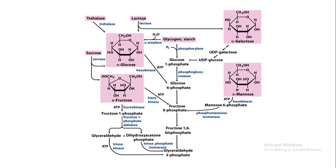Here is a sketch where you can see that all sugars other than glucose manage to convert themselves into one of the intermediates of glycolysis, and then contribute to energy production. For example, mannose, by the action of certain enzymes, is converted into fructose-6-phosphate, which then enters glycolysis and is converted into fructose-1,6-bisphosphate, G3P, dihydroxyacetone phosphate, and so on.